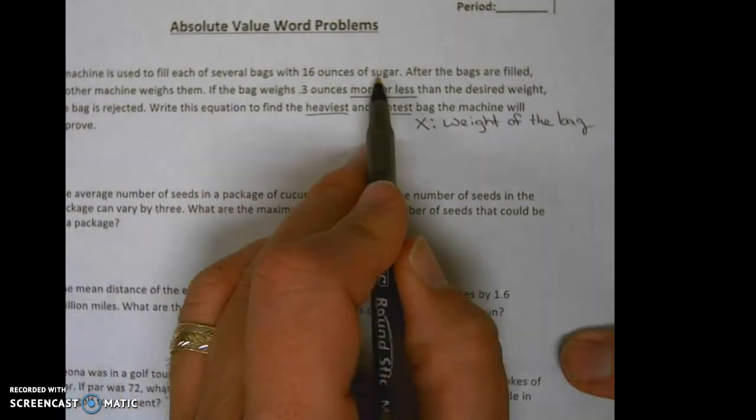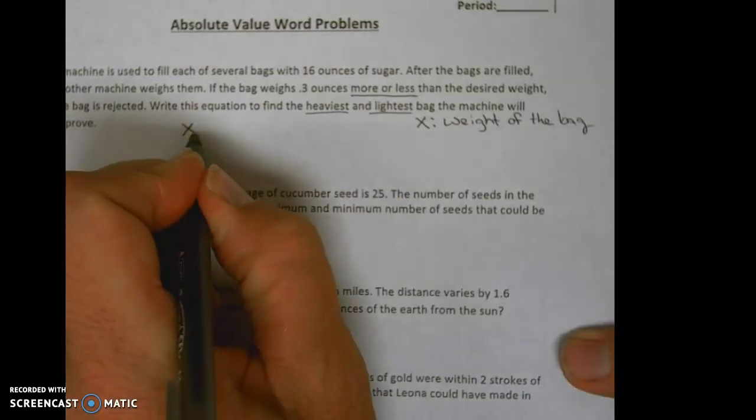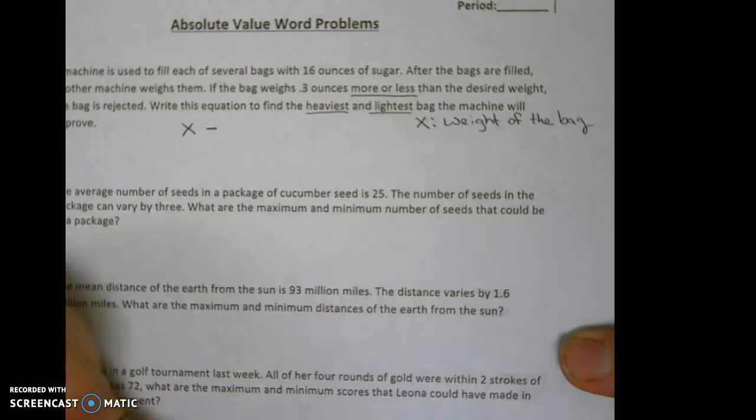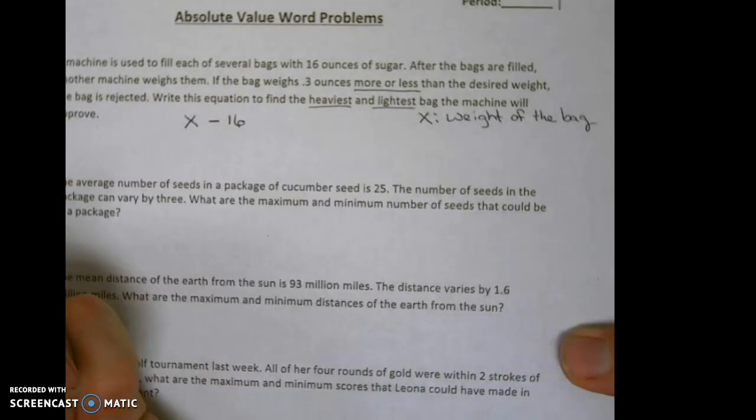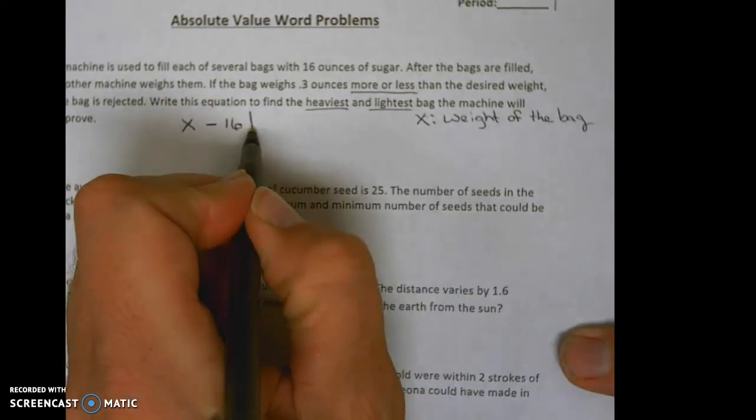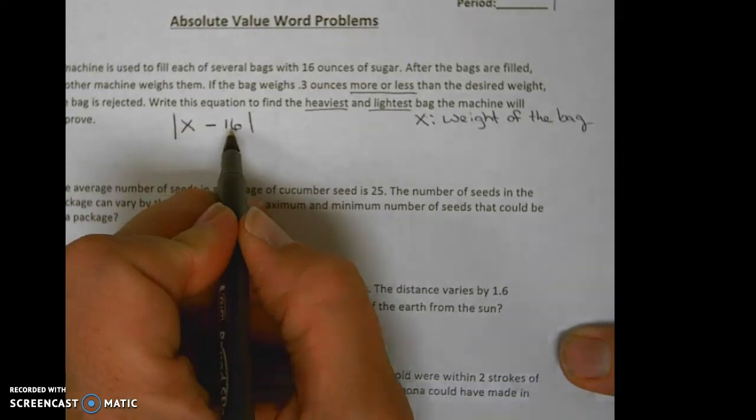And then we're going to take off the 16 ounces of sugar with absolute value around that, and the weight of the bag cannot be more or less than 0.3. So this is our varying amount above and below.